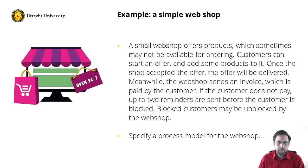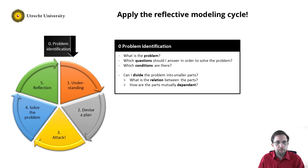Hence, let us apply the reflective modeling cycle on this context. The very first stage of the reflective modeling cycle is problem identification, in which we ask ourselves: what is the problem, and what questions should I answer? The question about what is the process instance in the webshop is an example of such a question.